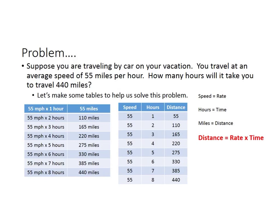Well, let's make some tables to help us solve this problem. The first table on the left shows you that if you go 55 miles per hour for one hour, you're gonna go 55 miles. 55 miles per hour times two hours, you're gonna go 110 miles, and so on, until we get down to the bottom and notice that 55 miles per hour in eight hours will get you the 440 miles.